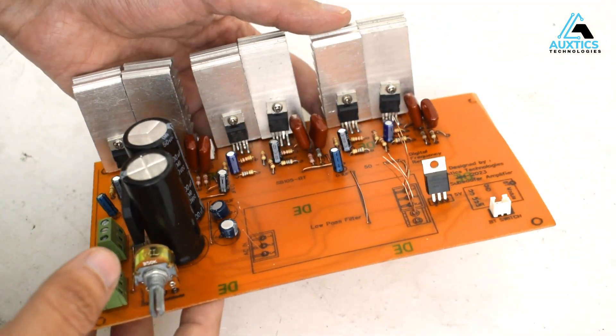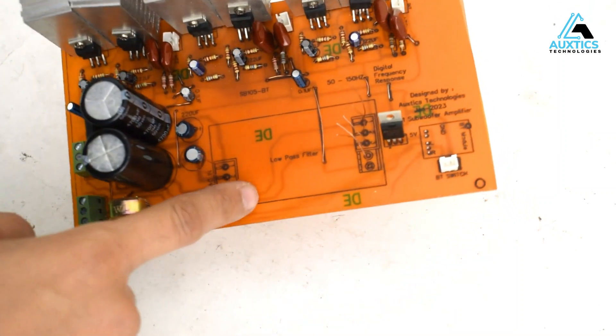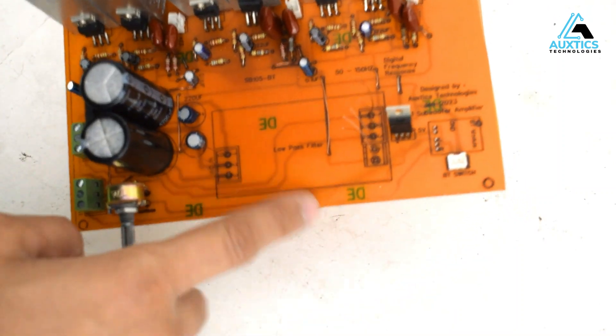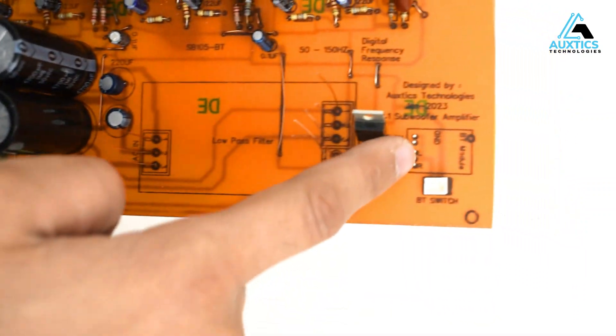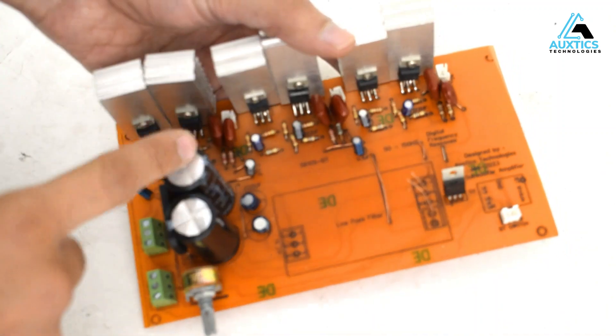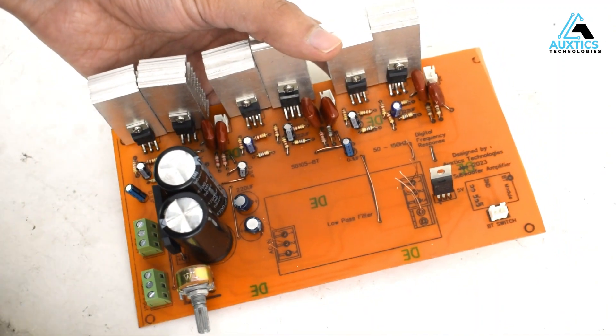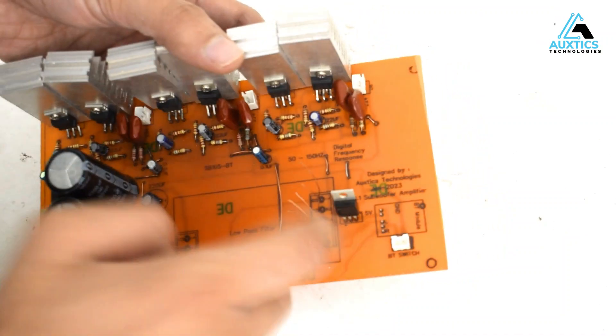You know that this is a 2.1 subwoofer amplifier and this is written as low pass filter. If you can see this, it is written as low pass filter and this is written as BT module. This means that this is a 2.1 system and I have external low pass filter and external Bluetooth module.